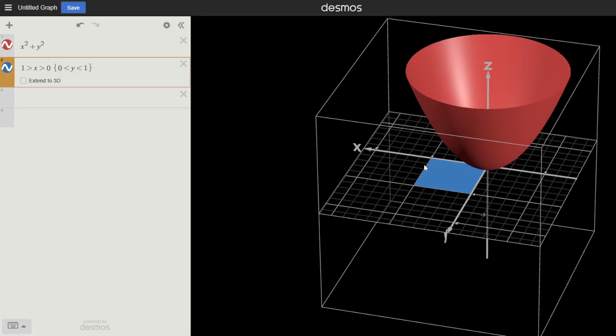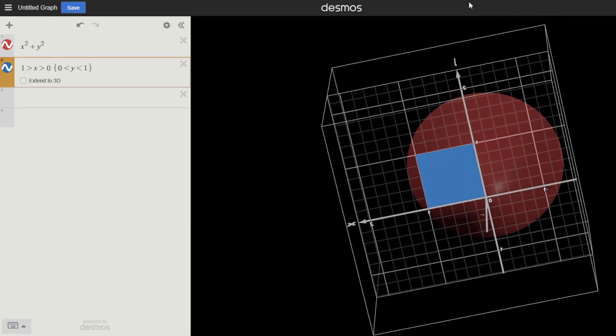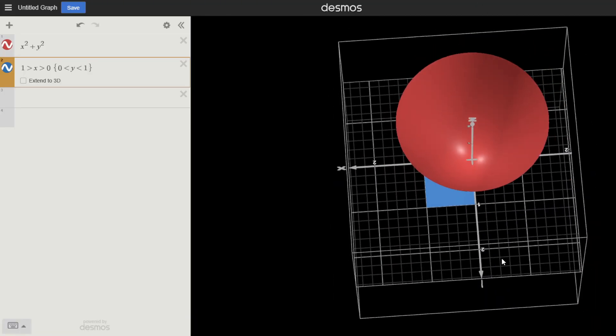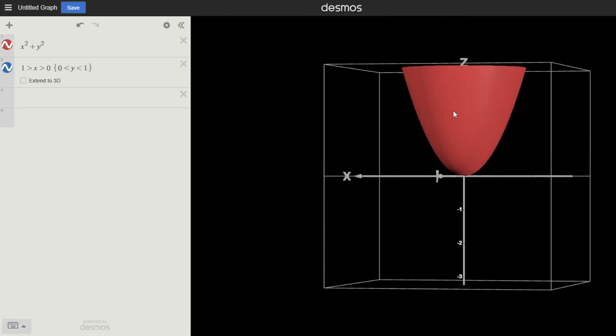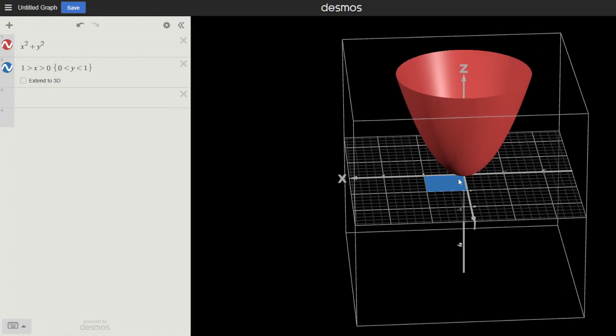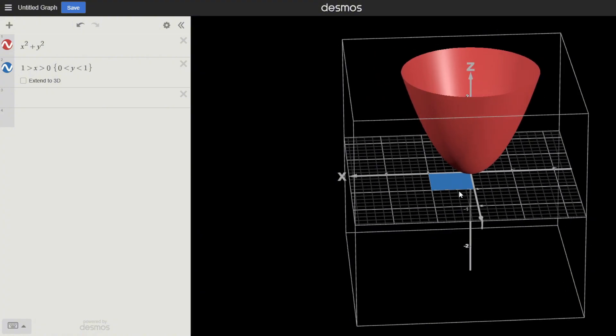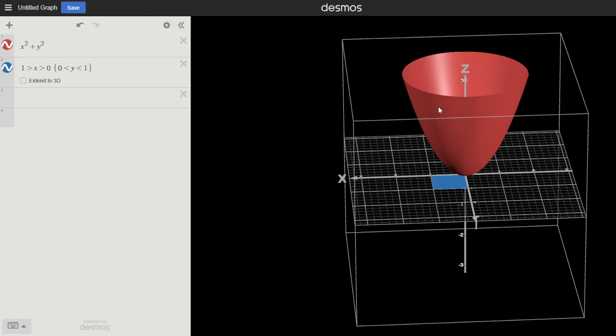Now that you're integrating with double integrals, you're going to find the volume under a surface instead. Anything that intersects with this, anything in between this area from 0 to 1 for x and y values and the surface, will count as volume.